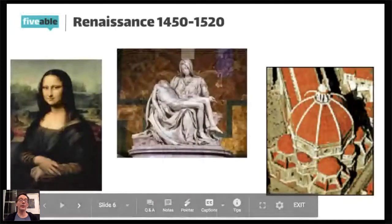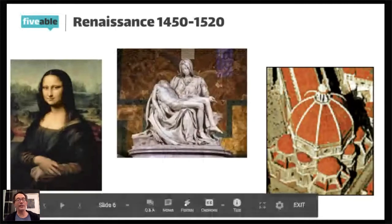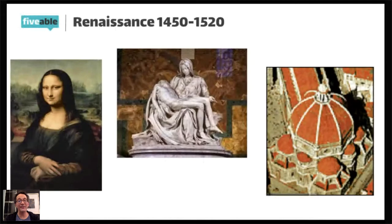Let's start with the Renaissance. The AP Europe course starts in 1450 and ends in 1914, or World War I. So why did they drop us in 1450? Kind of like the invention of the printing press or the height of the Renaissance.